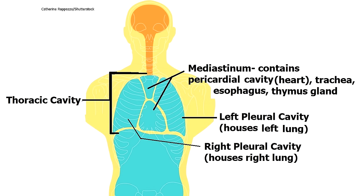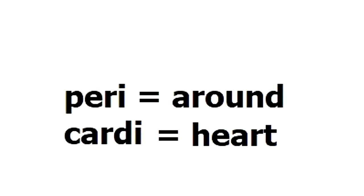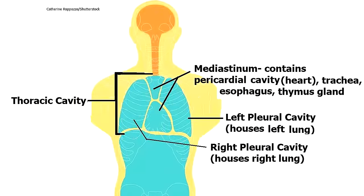The heart itself is located in the mediastinum and is surrounded by its own cavity called the pericardial cavity. This is easy to remember because peri means around and cardi means heart. Then you have the right pleural cavity, which houses the right lung.